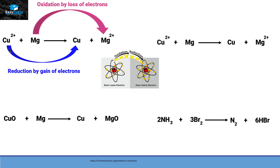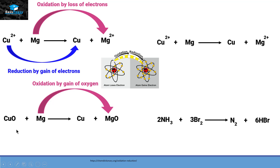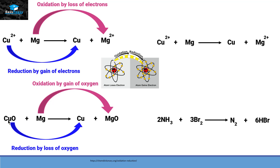The second criteria for determining oxidation or reduction is based on gain and loss of oxygen. In this reaction, magnesium gains oxygen from copper and converts into magnesium oxide — so magnesium is oxidized. On the other hand, copper oxide loses oxygen and converts into copper, so that is a reduction reaction.